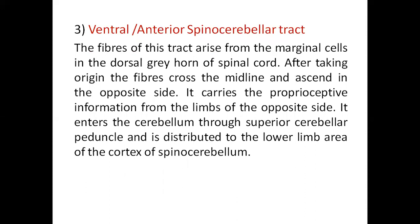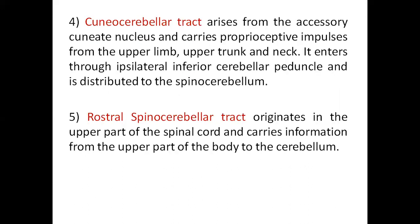The anterior spinocerebellar tract: fibers arise from the marginal cells in the dorsal gray horn of the spinal cord, cross the midline and ascend on the opposite side, carrying proprioceptive information from the limbs of the opposite side. It enters the cerebellum through the superior cerebellar peduncle and is distributed to the lower limb area of the spinocerebellar cortex. The cuneocerebellar tract arises from the accessory cuneate nucleus and carries proprioceptive impulses from the upper limb, upper trunk and neck, entering through the ipsilateral inferior cerebellar peduncle. The rostral spinocerebellar tract originates in the upper part of the spinal cord and carries information from the upper part of the body to the cerebellum.